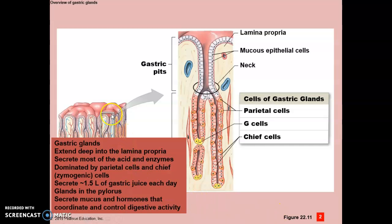Gastric glands are deep into the lamina propria and secrete most of the acid and enzymes. There are parietal cells and chief cells, and they secrete about one and a half liters of gastric juice every day. The glands in the pyloric region of the stomach secrete mucus and hormones that coordinate and control digestive activity.